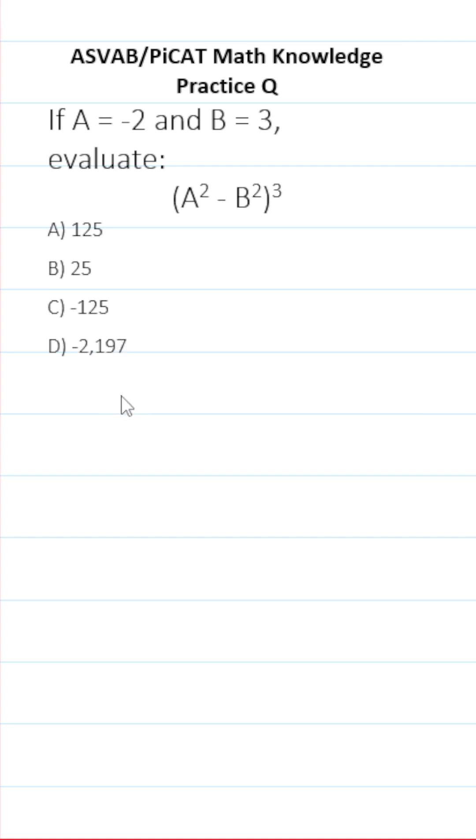Let's start by plugging these values in respectively. We know A is negative 2, so this is (-2)² minus, we know B is 3, so this is 3², and this is all raised to the third power.